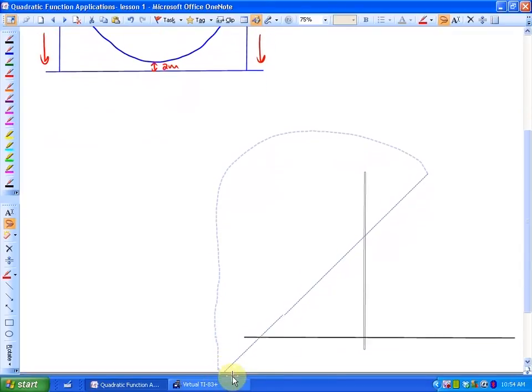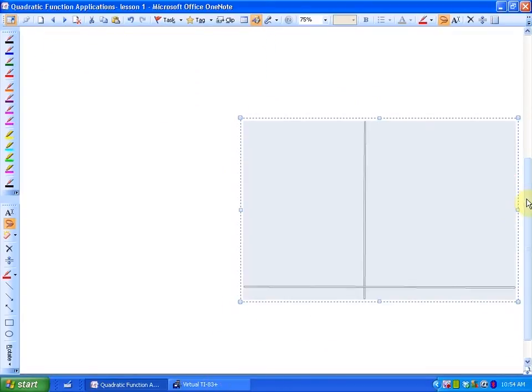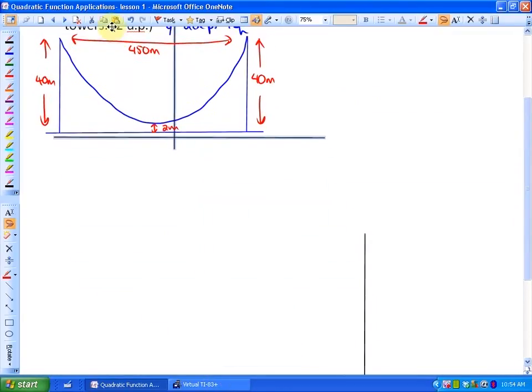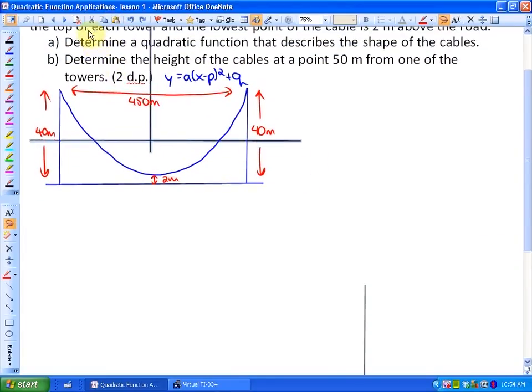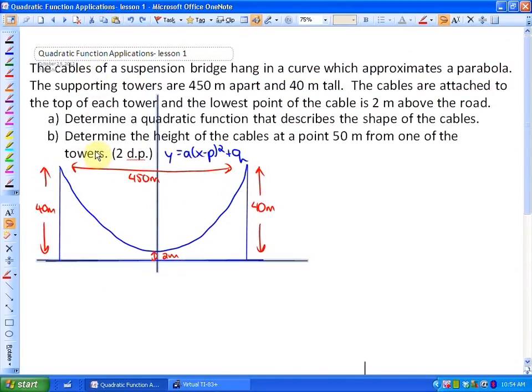My suggestion is that we place the x and y axis on the road, and in the middle of the suspension. So what I mean by that is I am going to place my problem in my x and y axis right here. What we'll look at later is if we put the x and y axis somewhere else, how that will affect the problem. But here's my decision.